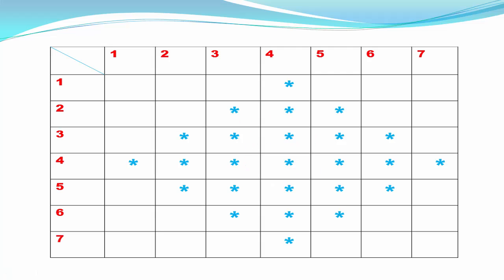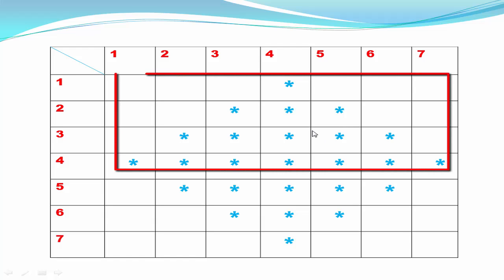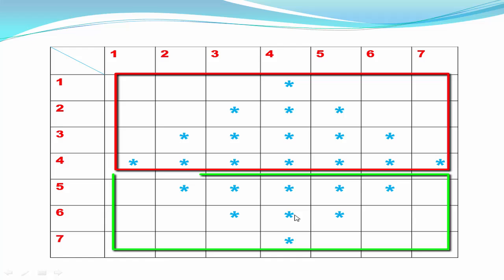Here we divide the whole screen into rows and columns. Now see the picture carefully and you will find two different patterns — this portion marked red color indicates one pattern, and this portion marked green color indicates another pattern.